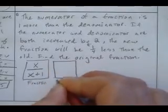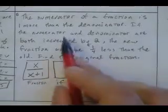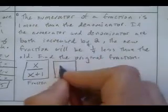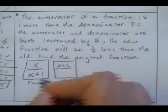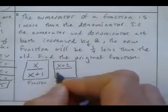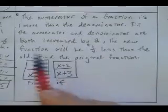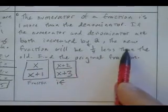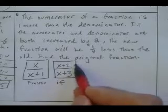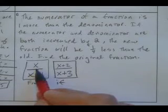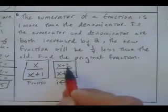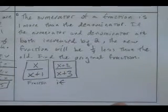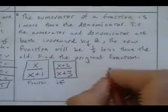And this is my if fraction. Whenever they do an if, make a separate if. If the numerator and denominator both increase by 2, so this becomes X plus 2. This becomes X plus 1 plus 2 more, so this is X plus 3. The new fraction will be one-fourth less than the old. So this guy is a quarter less than this. So this guy minus a quarter will equal this one.